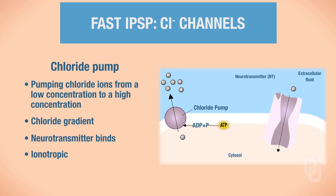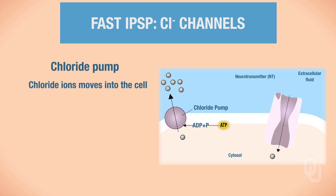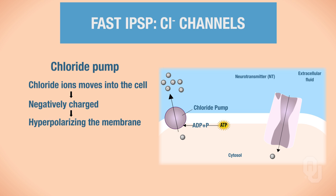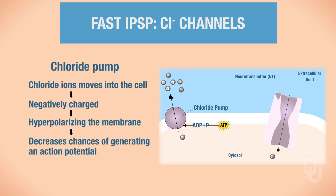When the neurotransmitter binds to the ionotropic chloride channel and the channel opens, chloride ions move into the cell, because the pump previously created that gradient — so we have chloride influx. Chloride carries a negative charge, so bringing more negative charges inside the cell hyperpolarizes the membrane. Hyperpolarizing the postsynaptic membrane decreases the chances of generating an action potential. This is one mechanism for using chloride channels to generate a fast IPSP.